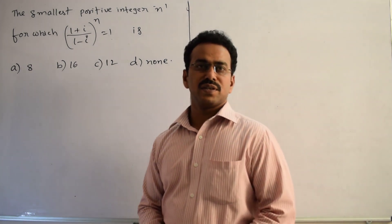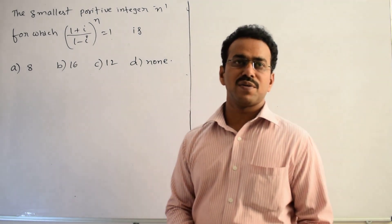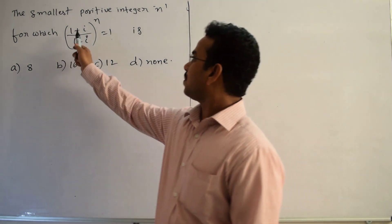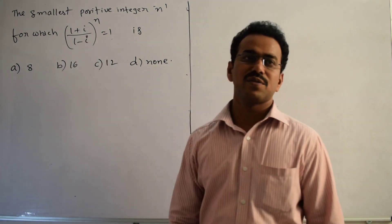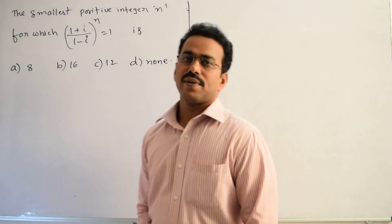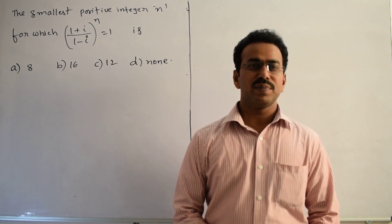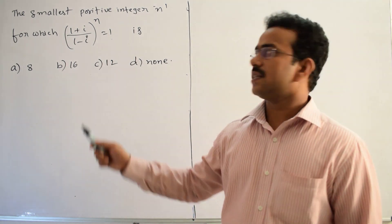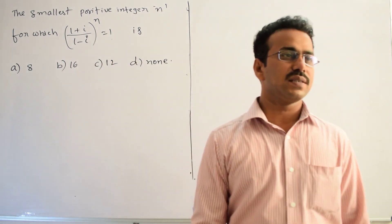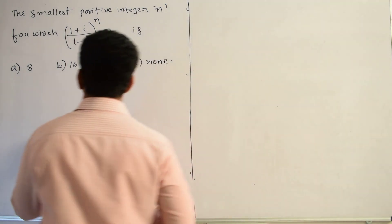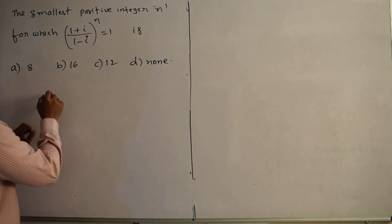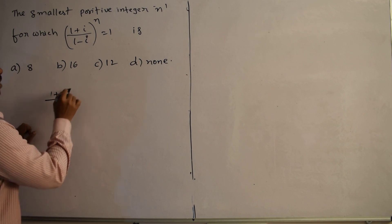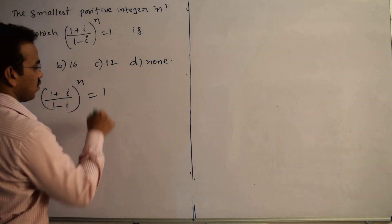Let's discuss the solution of the given question. The smallest positive integer n for which (1 plus i) divided by (1 minus i), all raised to the power n, equals 1. We have to calculate the smallest positive integer n that satisfies this complex equation.